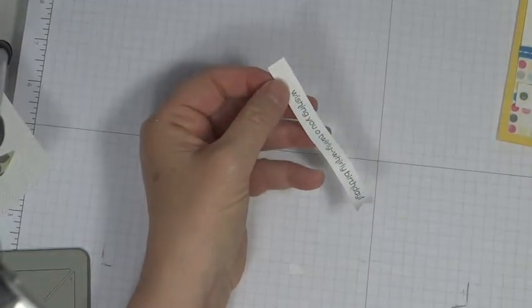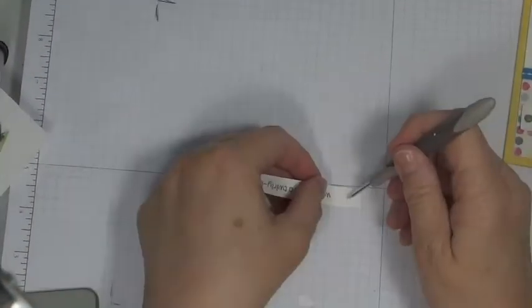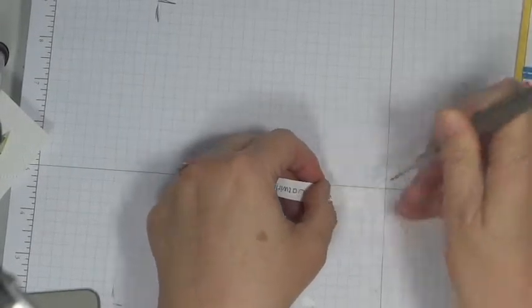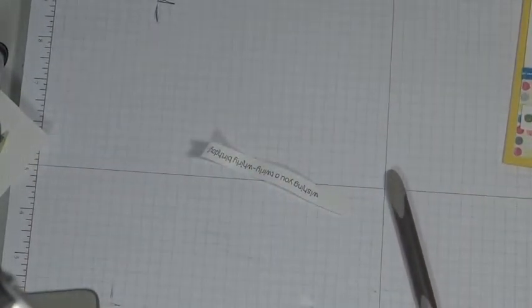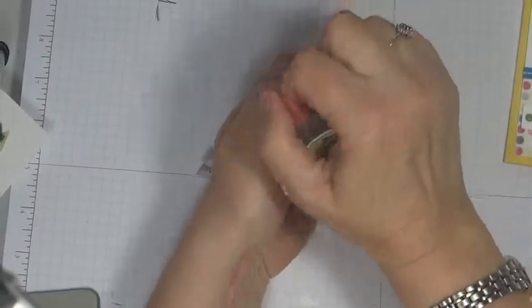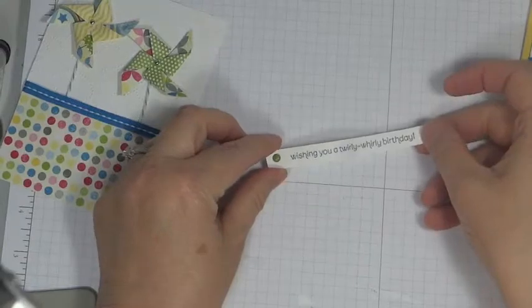And then I'm going to take a paper piercing tool, do a little hole right there and I'm going to take one of the brads from the Brights collection. Okay I've got my banner done.